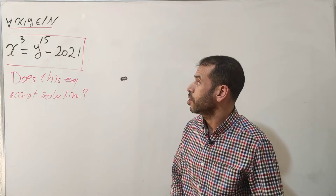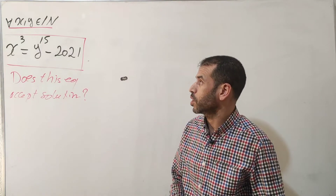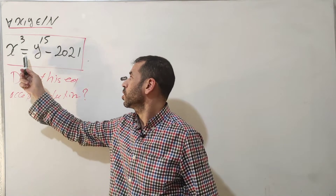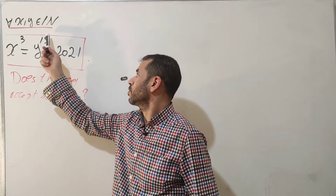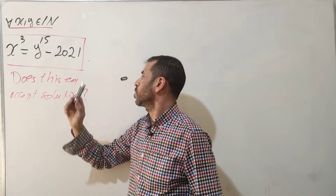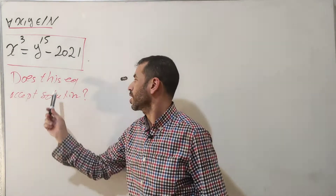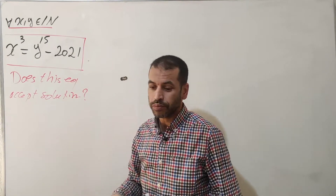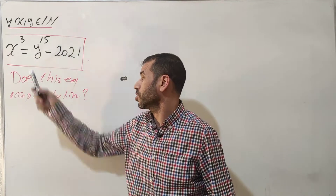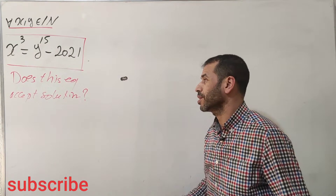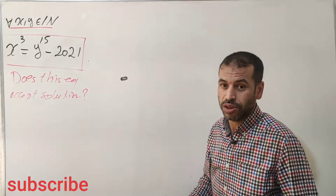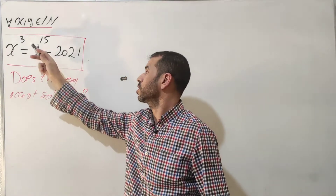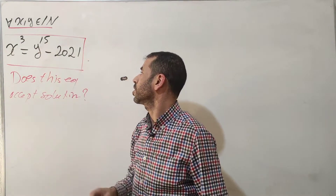In problem number three, the setup is: for all x, y as natural numbers satisfying the equation x³ = y¹⁵ - 2021. The question is: does this equation have a solution or not? We have two different exponents, 3 and 15, so we need a trick to deal with this.